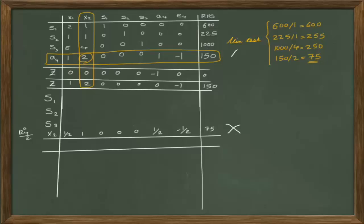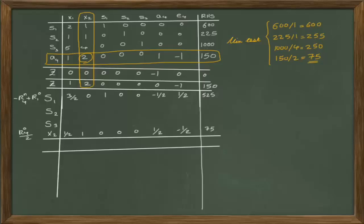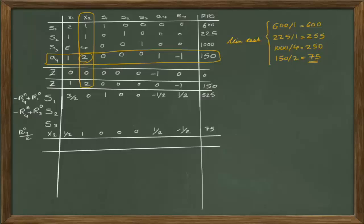Using the pivot row, we manipulate all other rows to produce 0 in the pivot column. For the first row, multiplying the pivot row by negative 1 and adding it to the first row generates 0. The elementary row operation is: negative pivot row (new table) plus row 1 (old table). Similarly, for the second row: negative r4 (new table) plus row 2 (old table) gives the new values.